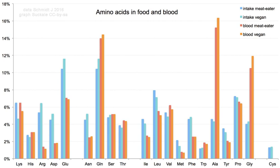They include the 22 proteinogenic amino acids, which combine into peptide chains — polypeptides — to form the building blocks of a vast array of proteins. These are all L-stereoisomers, or left-handed isomers, although a few D-amino acids, right-handed, occur in bacterial envelopes, as a neuromodulator and in some antibiotics.